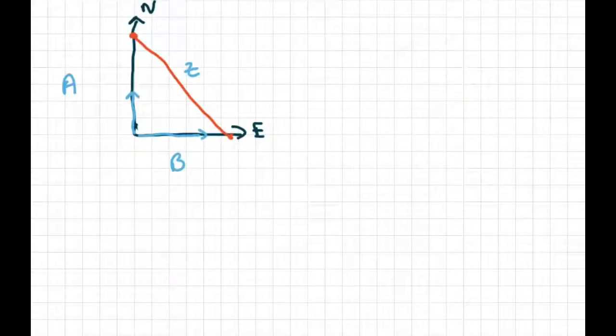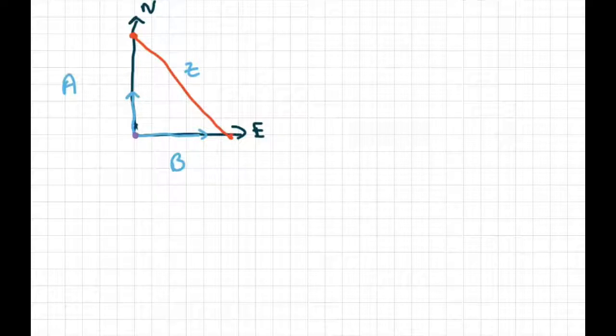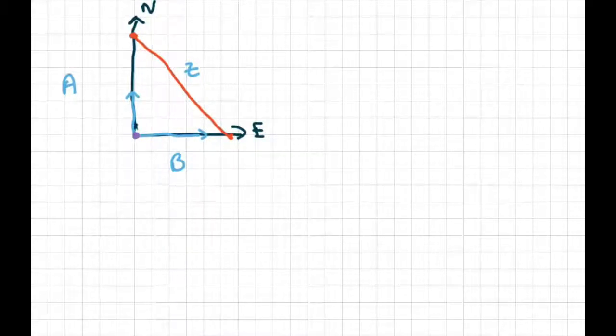So basically what we have, we have two boats moving at right angles to each other. So let's say they start at the origin here and they're forming a right triangle. So the distance between them is the hypotenuse.